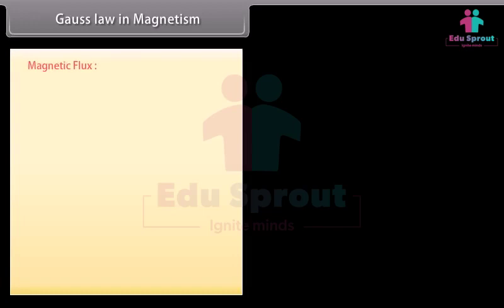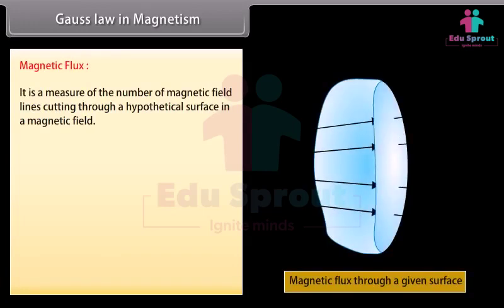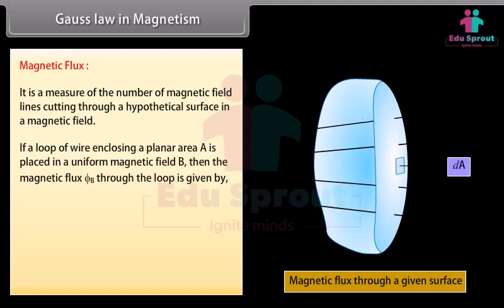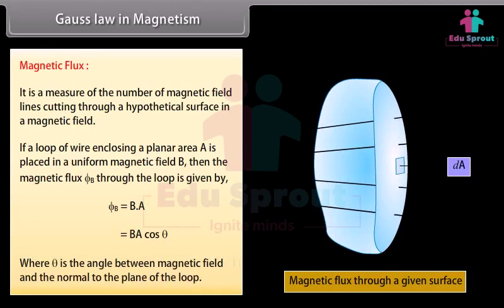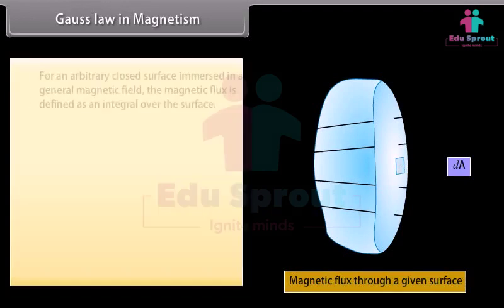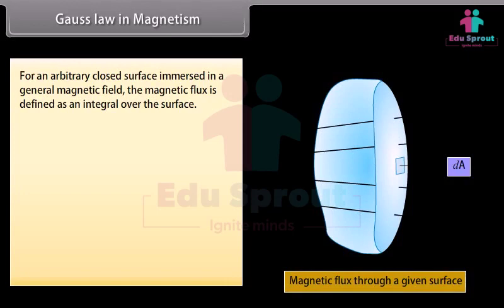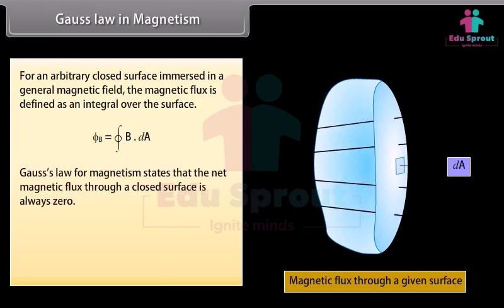Gauss's law in magnetism — Magnetic flux: It is a measure of the number of magnetic field lines cutting through a hypothetical surface in a magnetic field. If a loop of wire enclosing a planar area A is placed in a uniform magnetic field B, the magnetic flux phi B through the loop is given by the dot product of B and A, which equals BA cos theta, where theta is the angle between the magnetic field and the normal to the plane of the loop. For an arbitrary closed surface, phi B equals the closed integral of B dot dA. Gauss's law of magnetism states that the net magnetic flux through a closed surface is always zero. The SI unit of magnetic flux is Weber.